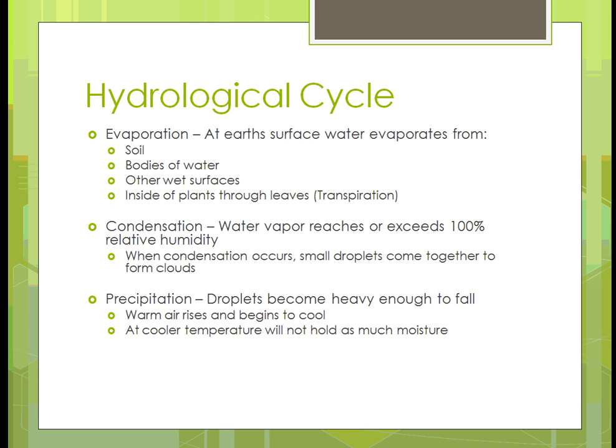Evaporation occurs at the Earth's surface. It can come from soil — when the sun hits it, moisture comes out and that's how soil dries. It can come off bodies of water like oceans, rivers, streams, and lakes, or any other wet surface. When it dries, it becomes vapor and goes up to form clouds. Inside plants, through the leaves via what's called the stomata — which we covered in a prior unit — water vapor exits, and that's called transpiration.